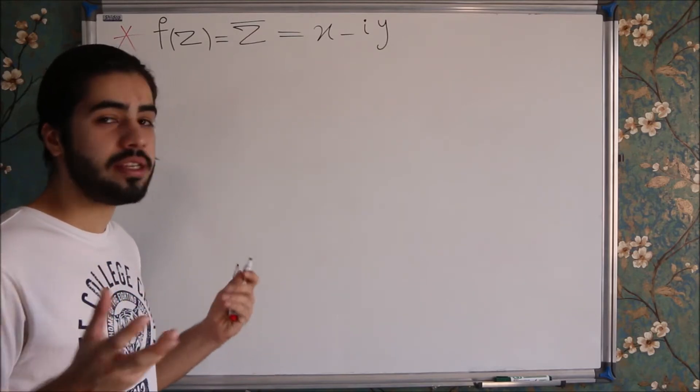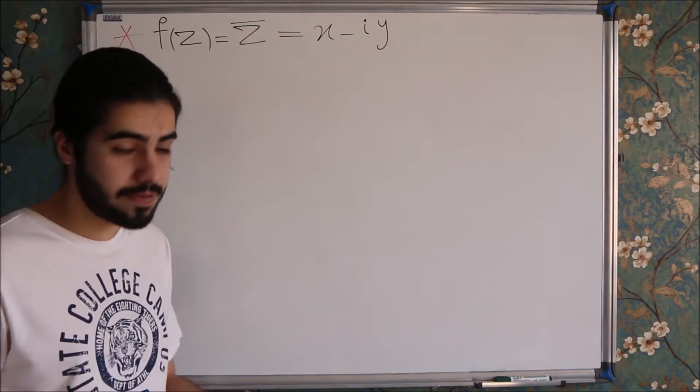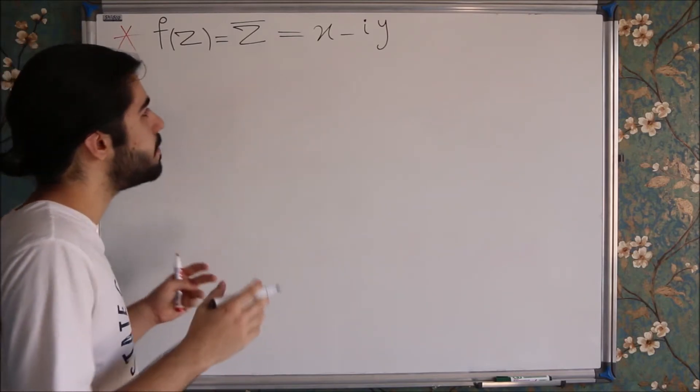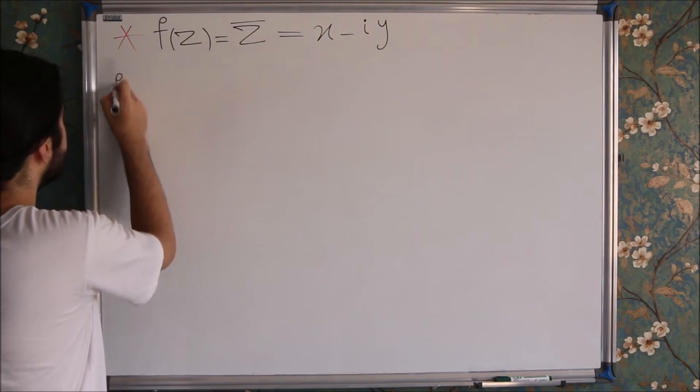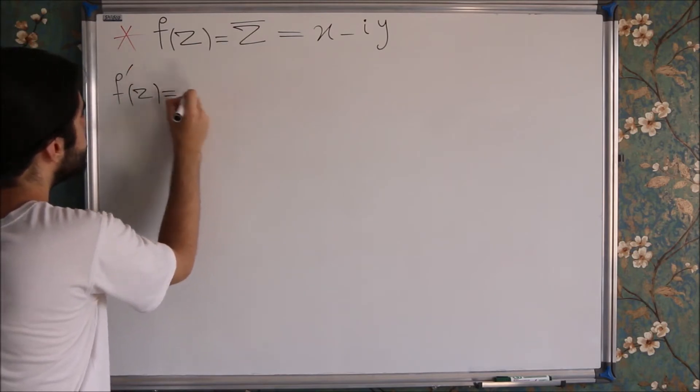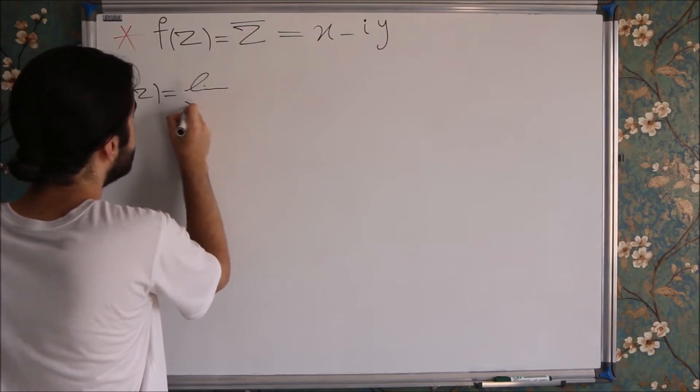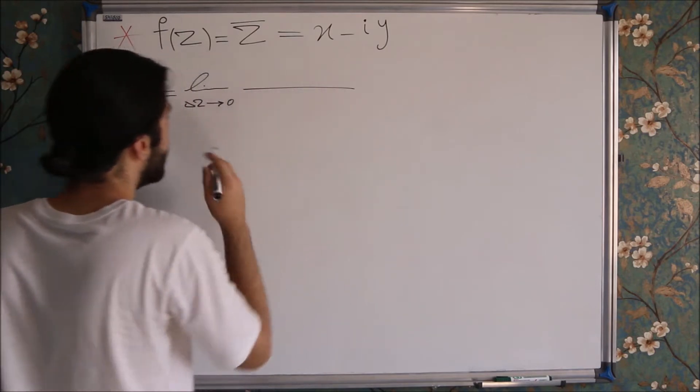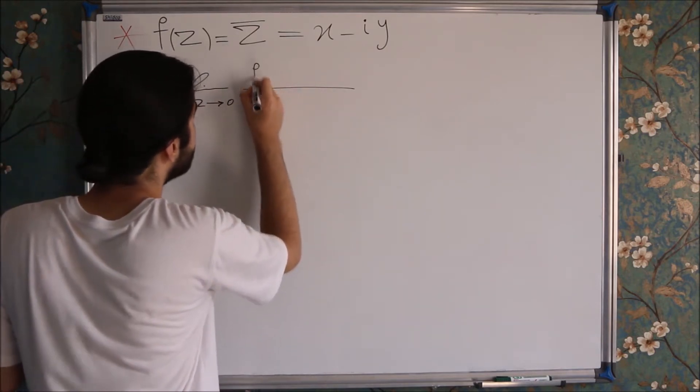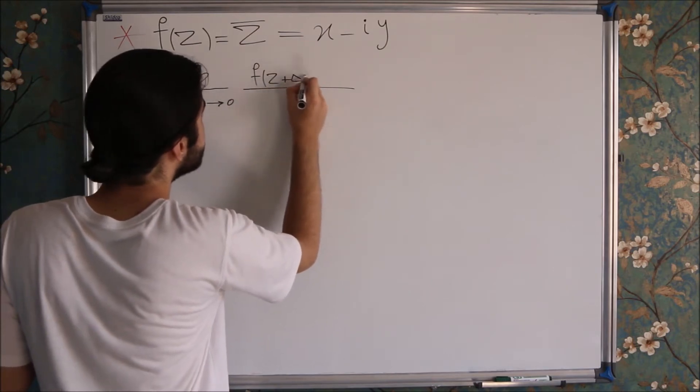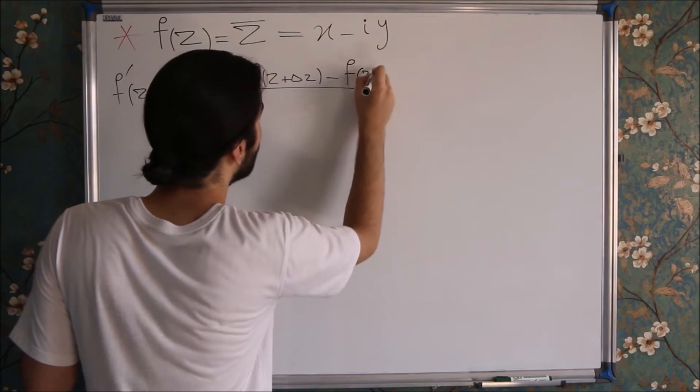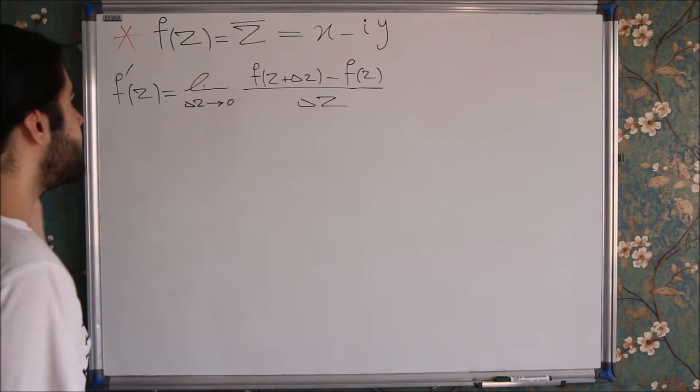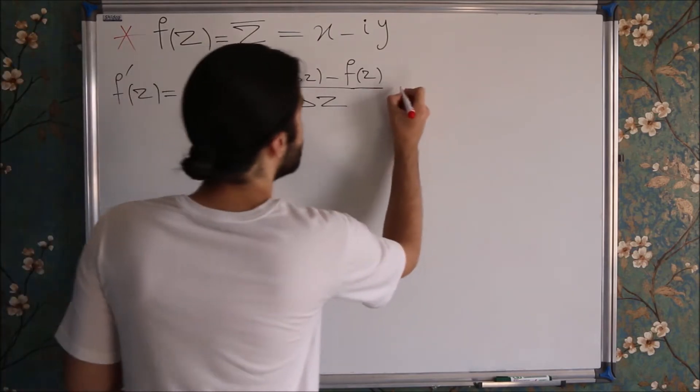The ordinary definition of derivative states that f prime of Z is equal to the limit of Delta Z when it goes to zero, or as it approaches zero, of f of Z plus Delta Z minus f of Z over Delta Z.